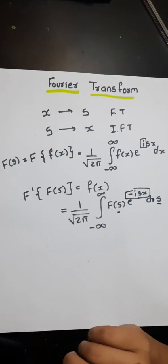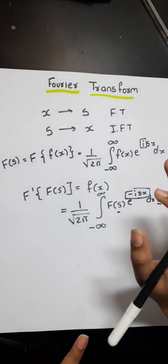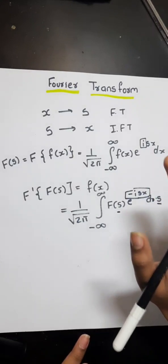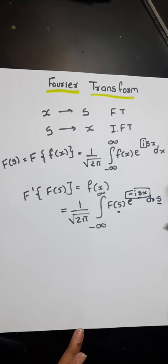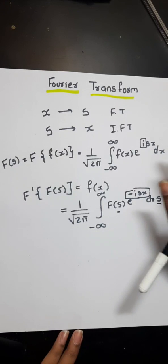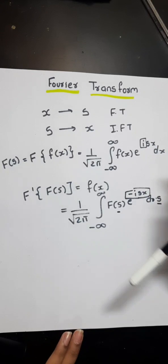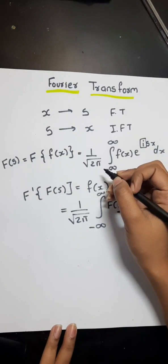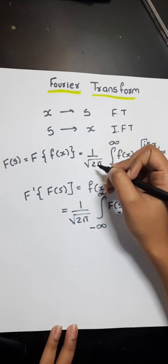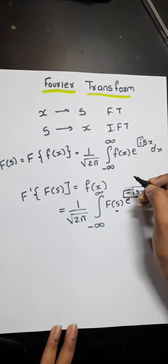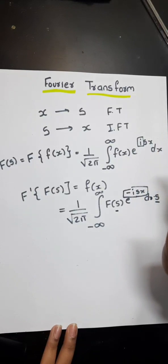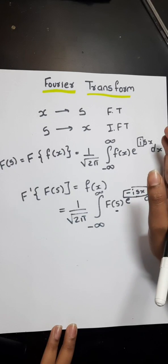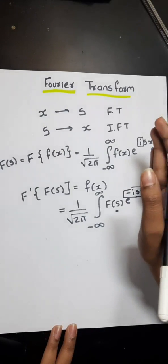Before starting I would like to say that this is a completely formula based chapter. There are just basic formulas and properties of it and there are many variations to the basic formulas also. Just stick with any one formula set. You will find different books writing 1 upon 2 pi or 1 upon under root 2 pi. They all are correct but for your better understanding just stick with only one book or one reference that you are following.